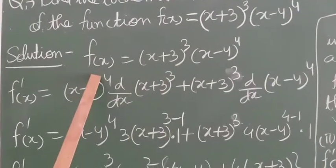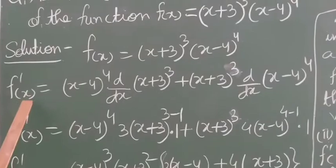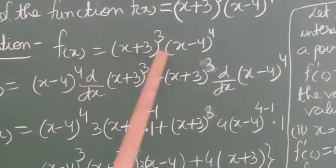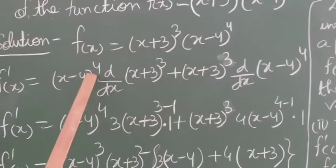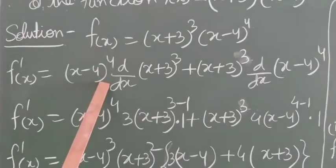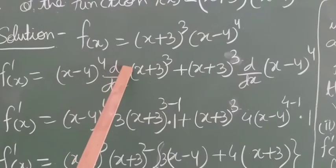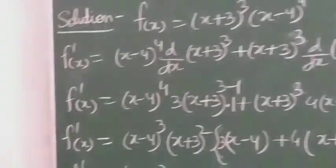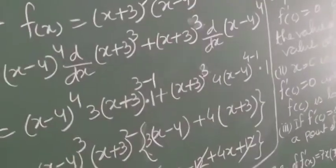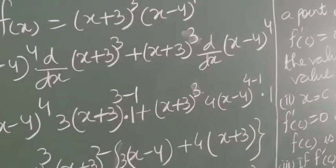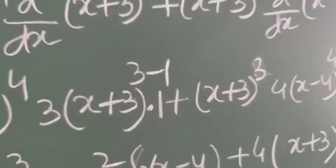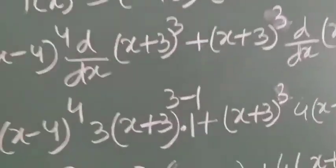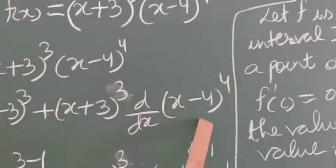Let us find the first order derivative f'(x). We have to use the product rule here. (x−4)⁴ will remain as it is, multiplied by the derivative of (x+3)³, then plus (x+3)³ remains as it is, multiplied by the derivative of (x−4)⁴.